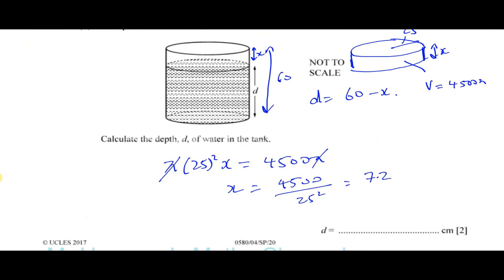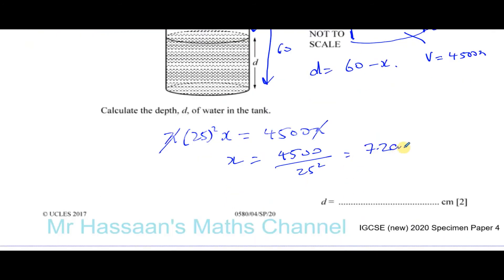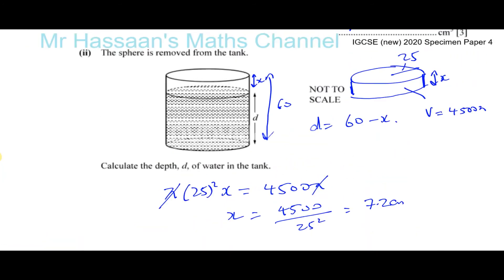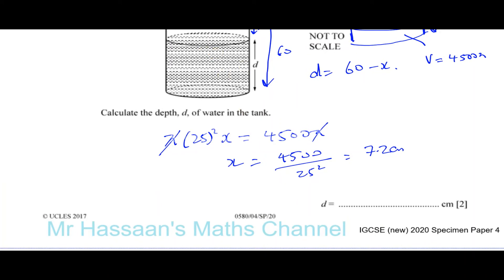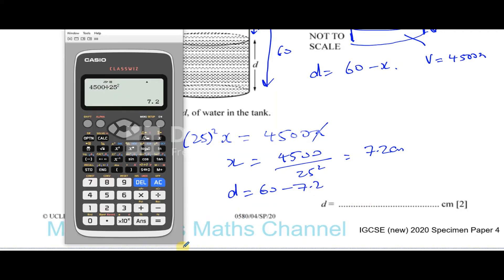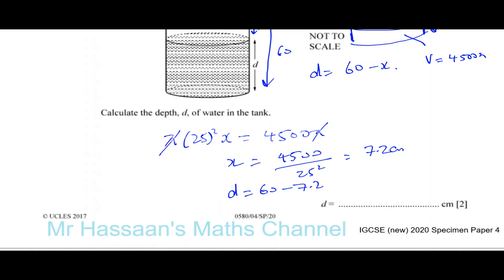That x = 7.2 is not the final answer — that's the amount the water dropped. The depth of water remaining in the tank is 60 minus 7.2, which gives 52.8 centimeters. That's the answer to part b(ii).